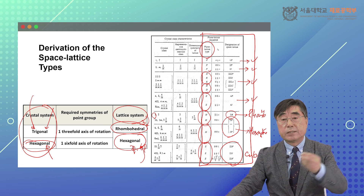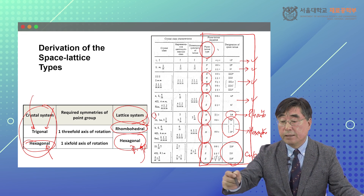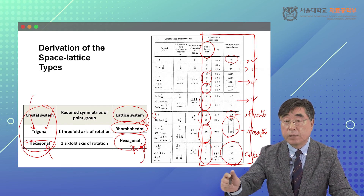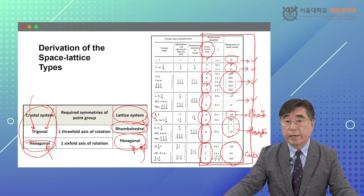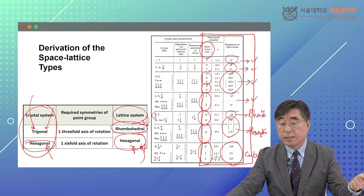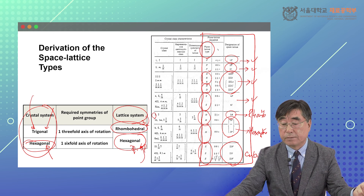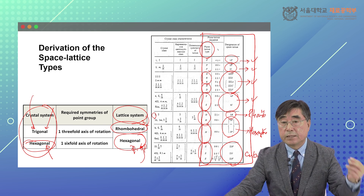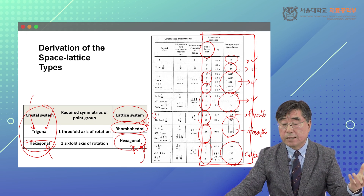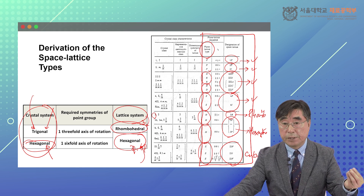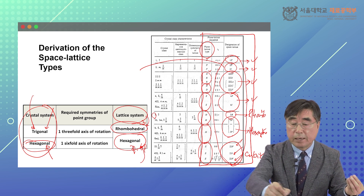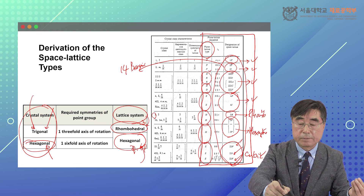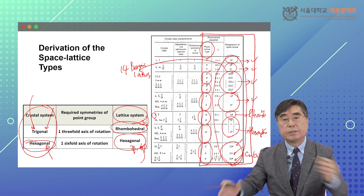When we define these systems, there can be more than one lattice point in a unit cell: 1P is primitive triclinic; 2P is primitive monoclinic and body-centered monoclinic; 2-2-2 orthorhombic can have 4 different Bravais lattices — primitive, body-centered, A-face-centered, and all-face-centered; 4-fold tetragonal has primitive and body-centered tetragonal; rhombohedral, hexagonal, and cubic have primitive, body-centered, and face-centered cubic. Counting all of these gives 14 Bravais lattices belonging to 7 crystal systems.